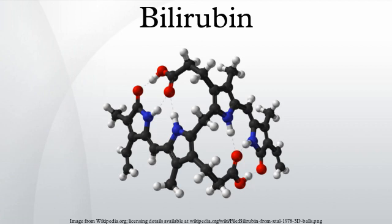There, colonic bacteria deconjugate and metabolize the bilirubin into colorless urobilinogen, which can be oxidized to form urobilin and stercobilin — these give stool its characteristic brown color. A trace of the urobilinogen is resorbed into the enterohepatic circulation to be re-excreted in the bile; some of this is instead processed by the kidneys, coloring the urine yellow. Although the terms direct and indirect bilirubin are used equivalently with conjugated and unconjugated bilirubin, this is not quantitatively correct, because the direct fraction includes both conjugated bilirubin and delta-bilirubin. Furthermore, direct bilirubin tends to overestimate conjugated bilirubin levels due to unconjugated bilirubin that has reacted with diazosulfanilic acid, leading to increased azobilirubin levels.